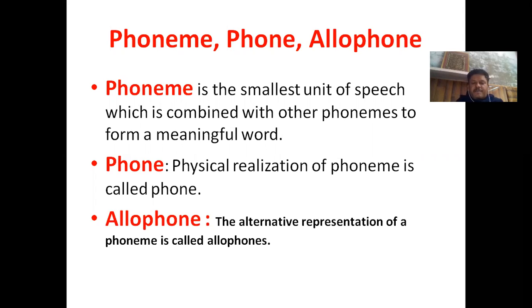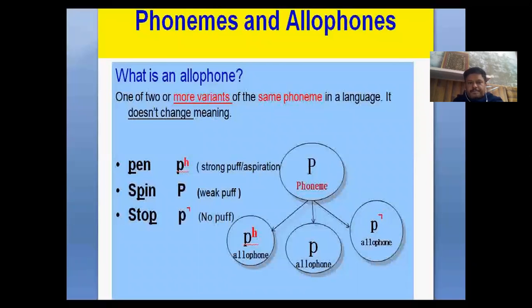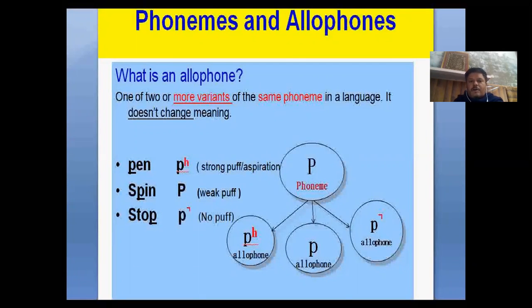Allophone is a phoneme of different versions. One or two or more variants of the same phoneme in a language are called allophones. We can define that allophones are the variants of the same phoneme.